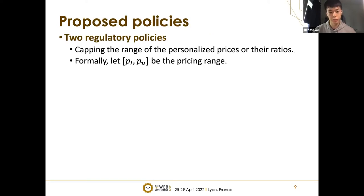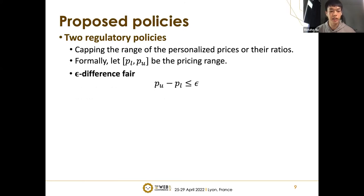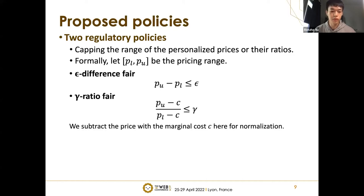Our proposed policies are simple but can be proved effective in balancing the profits of consumers and companies. We aim to cap the range of personalized prices or their ratios. Let PL and PU be the pricing range. For the first regulatory instrument, termed epsilon-difference fair, it requires that the maximum price difference is no more than epsilon: PU minus PL ≤ epsilon. For the second, termed gamma-ratio fair, it requires that the ratio (PU minus C) over (PL minus C) is no more than gamma, where we subtract the marginal cost C for normalization.